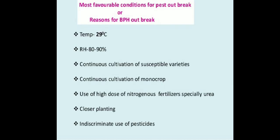The most favorable conditions for brown plant hopper outbreak include: temperature of about 29°C, relative humidity of 80 to 90%, continuous cultivation of susceptible varieties, continuous monocropping of the same crop for multiple generations, use of high doses of nitrogenous fertilizers like urea, closer planting, and indiscriminate use of pesticides. Thank you, students.